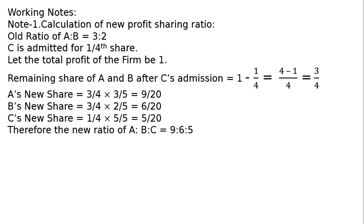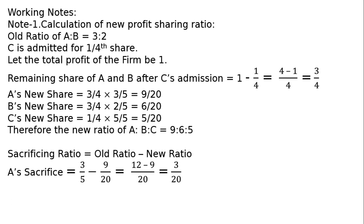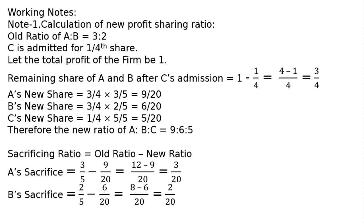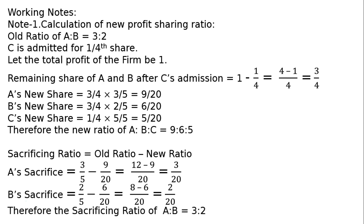So the fractions are 9 by 20, 6 by 20, and 5 by 20. Therefore the new ratio of A is to B is to C equals 9 is to 6 is to 5. Sacrificing ratio equals old ratio minus new ratio. A's sacrifice: old share 3 by 5 minus new share 9 by 20. LCM is 20, so 12 minus 9 gives 3 by 20. B's sacrifice: 2 by 5 minus 6 by 20 gives 8 minus 6, that is 2 by 20. So sacrificing ratio of A to B is 3 is to 2.